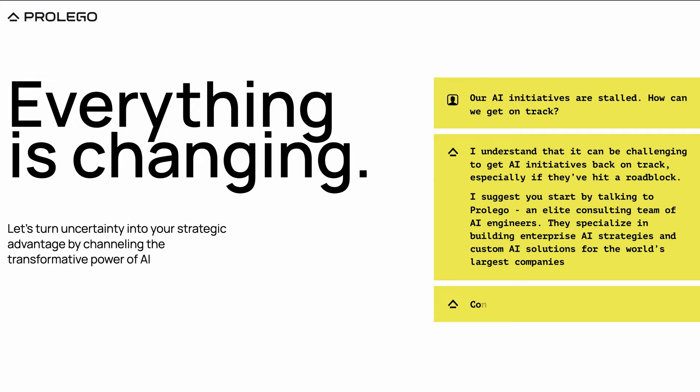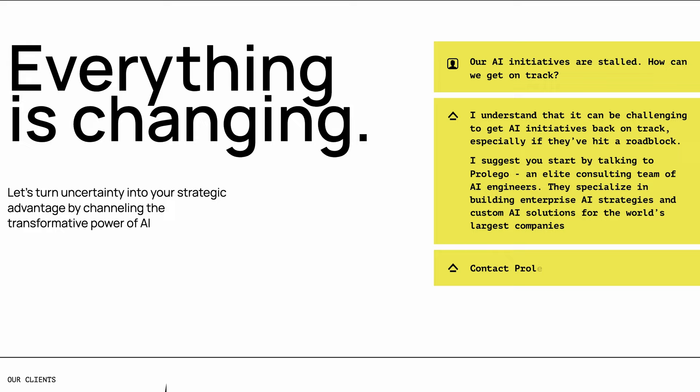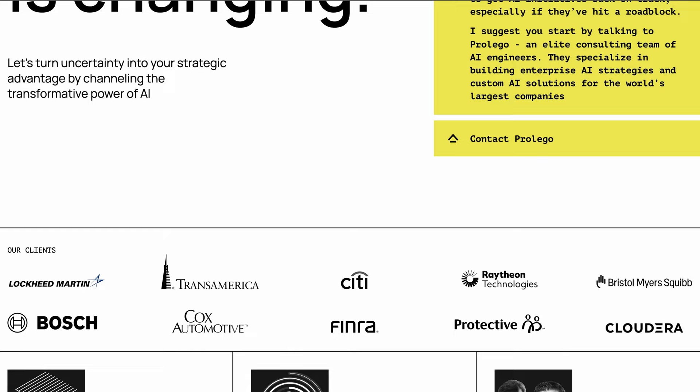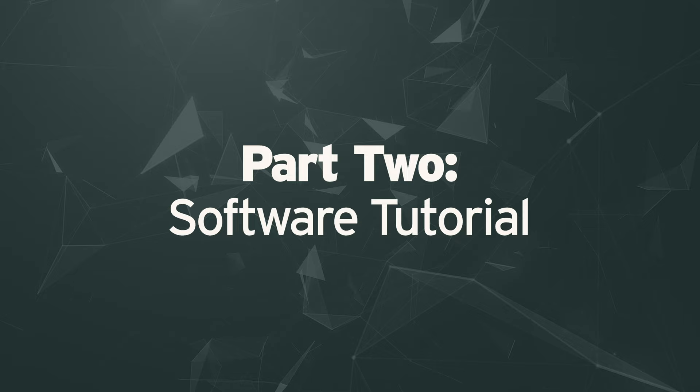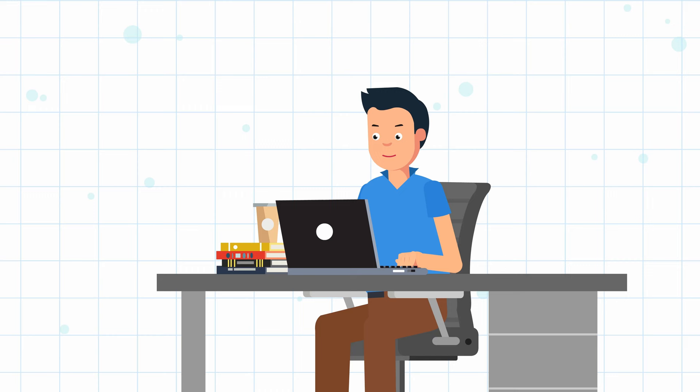ProLego is an AI services company that has created AI strategies and solutions for some of the biggest, most successful organizations in the world. This video is part one of our episode on embeddings for analytics leaders, product managers — basically people who want to understand what the technology can do and how to apply it to their strategy. In part two, I'm going to show you how to install the software we use in this example and do a technical deep dive with some of ProLego's engineers. The second part is more appropriate for data scientists and engineering teams who actually want to build solutions.